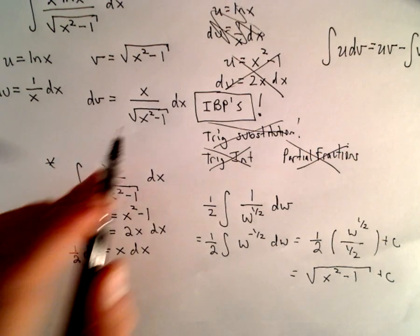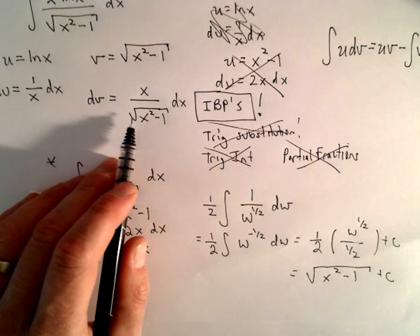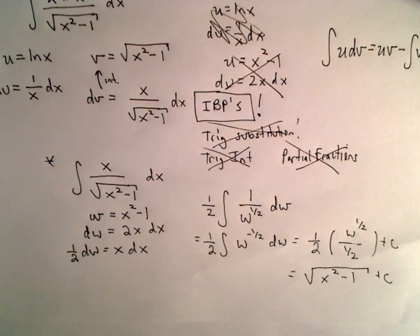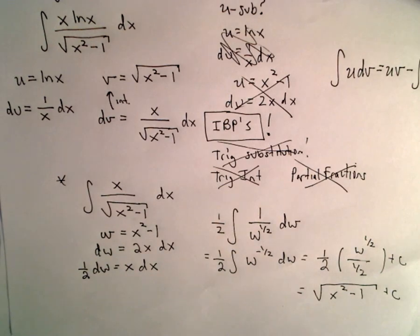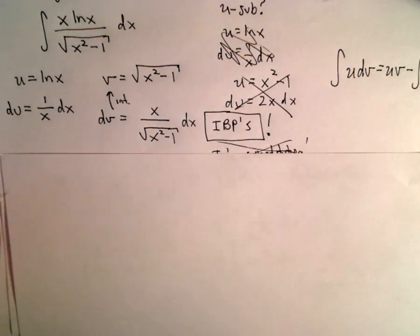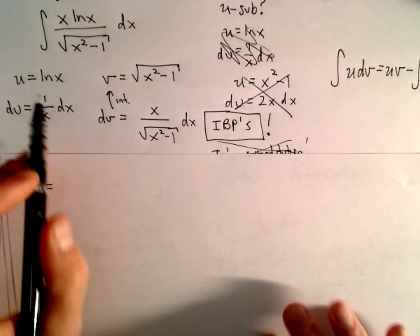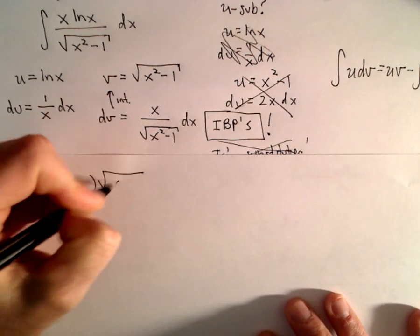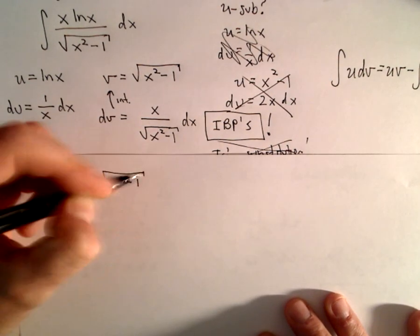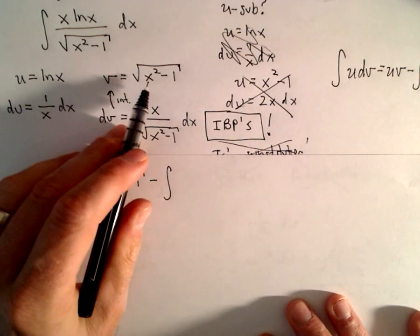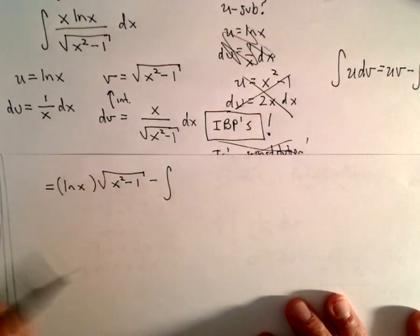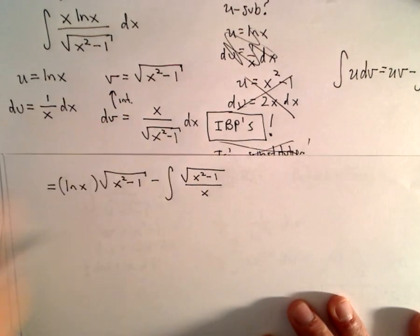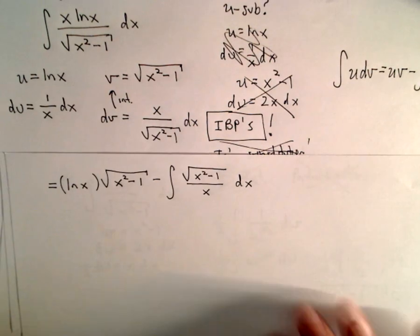That's the interesting thing with integration by parts — picking your dv and then integrating to get v can sometimes be a problem unto itself. Now let's use our integration by parts formula. We get u times v: ln(x) times √(x²-1), minus the integral of v times du, which gives us √(x²-1) over x, dx.